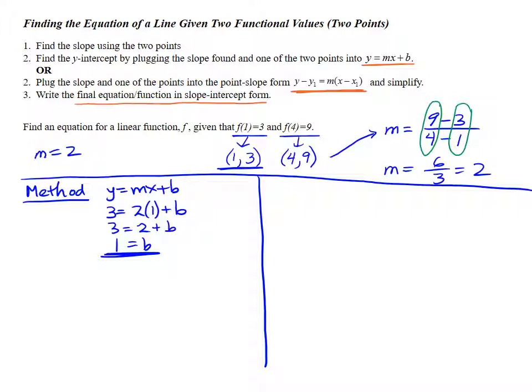Once you have that the y-intercept is 1, we can write this as a function. So remember this is function f. So we'd say f of x equals mx plus b, just like this. So the m is 2, x plus b is 1. So we get the function f of x equals 2x plus 1.